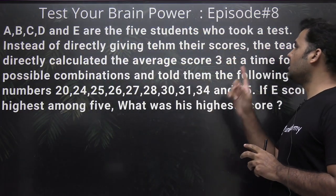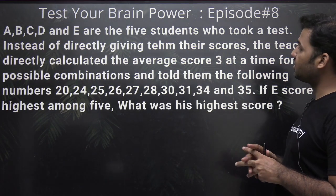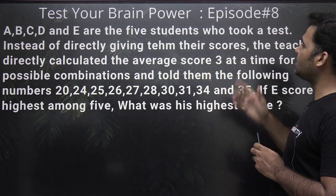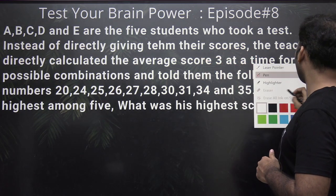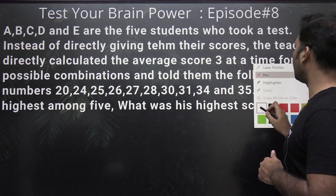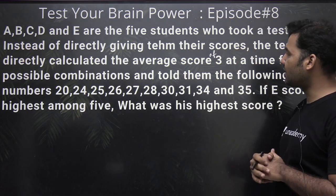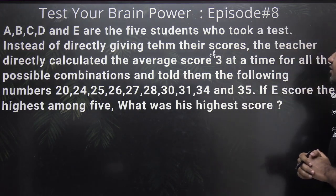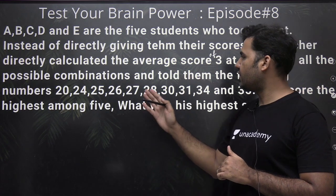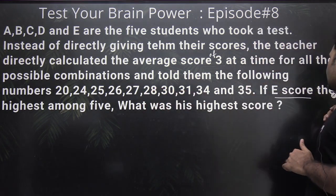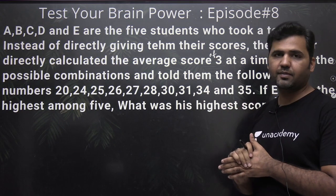A, B, C, D and E are the five students who took a test. Instead of directly giving them the scores, the teacher calculated the average score of three at a time for all possible combinations and told them the following numbers: 20, 24, 25, and so on. If E scores the highest among the five, what was his highest score?